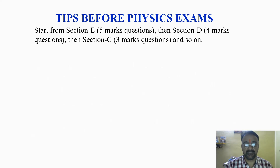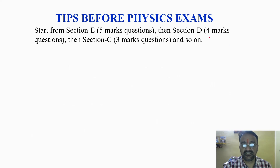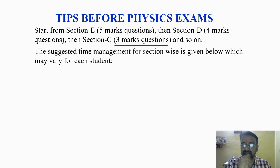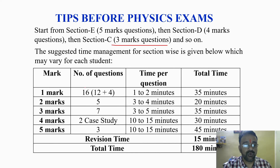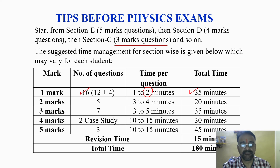Coming to time management — I suggest that students start from Section E, that is the 5-mark questions, then Section D which is 4-mark questions, then Section C which is 3-mark questions, and so on. For Section A, which is 1-mark questions, there are 16 questions — 12 MCQs and 4 assertion-reasoning questions — with a maximum of 2 minutes each, and an overall maximum of 35 minutes.